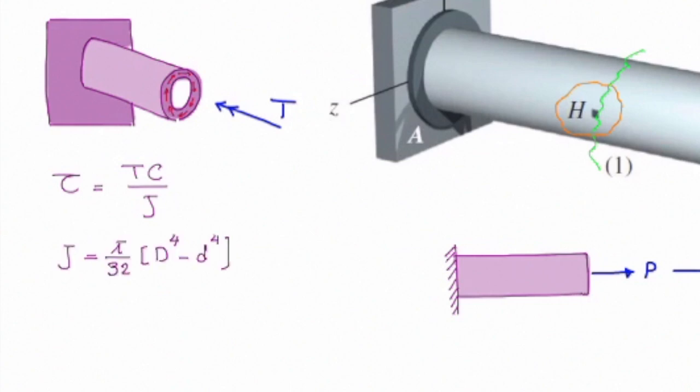Let me do the calculations. Torque is given. Let me calculate J, which is π/32 times the external diameter to the fourth minus internal diameter to the fourth. If I plug the values, that gives me J equal to 13.6 times 10 to the sixth.